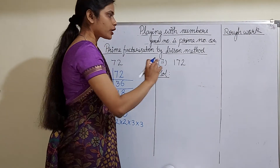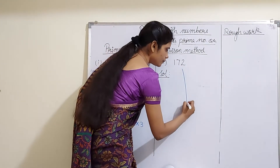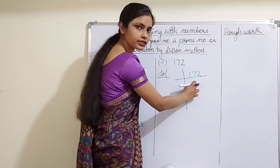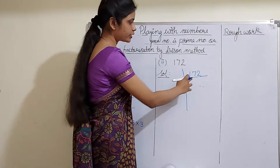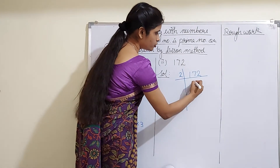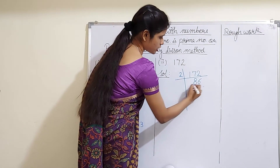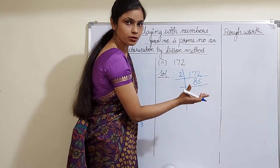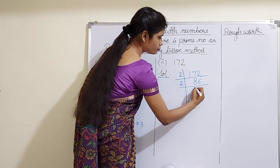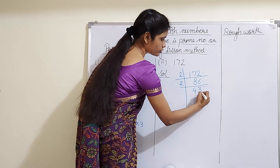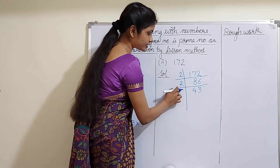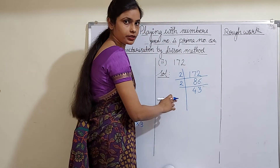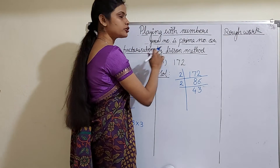The next example is 172. Start dividing it by the prime factors. The smallest prime number is 2, and 172 is exactly divisible by 2, giving 86. Now again, divide 86 by 2 — it is exactly divisible by 2, giving 43. The quotient is written here and the divisor on this side; the divisor is always a prime number when doing prime factorization by division method.